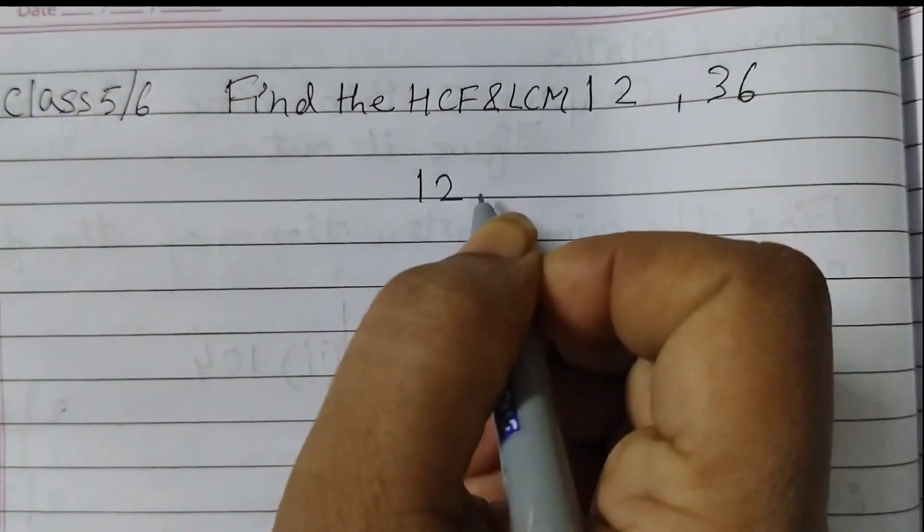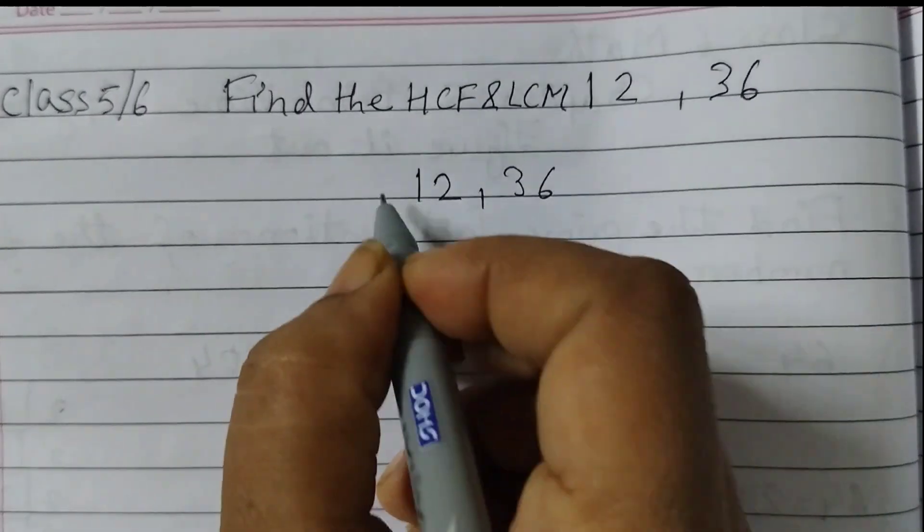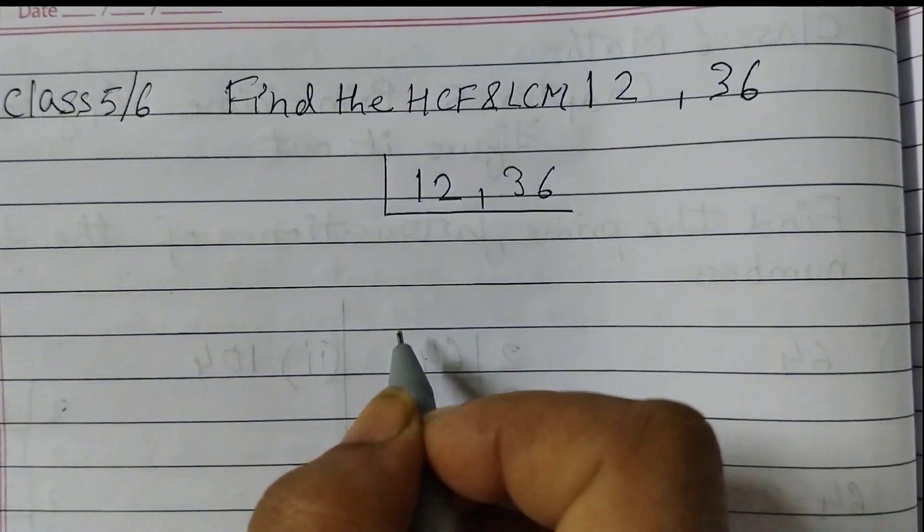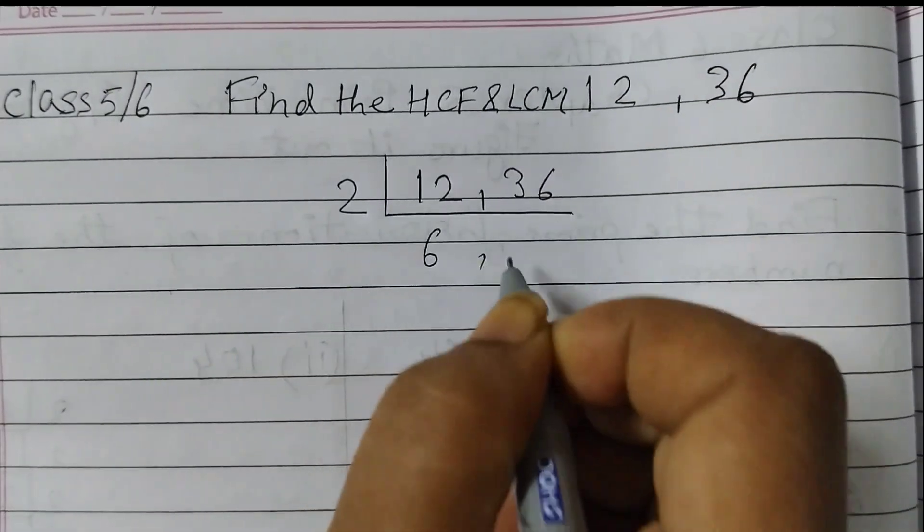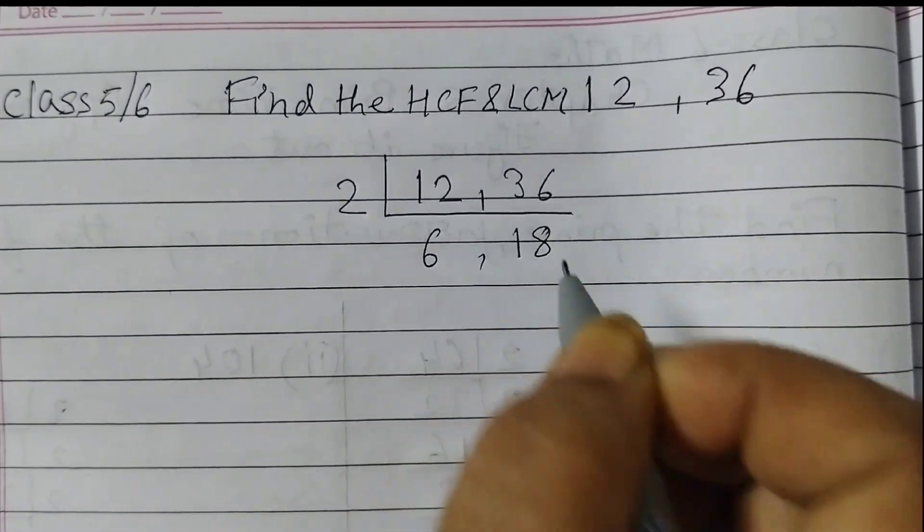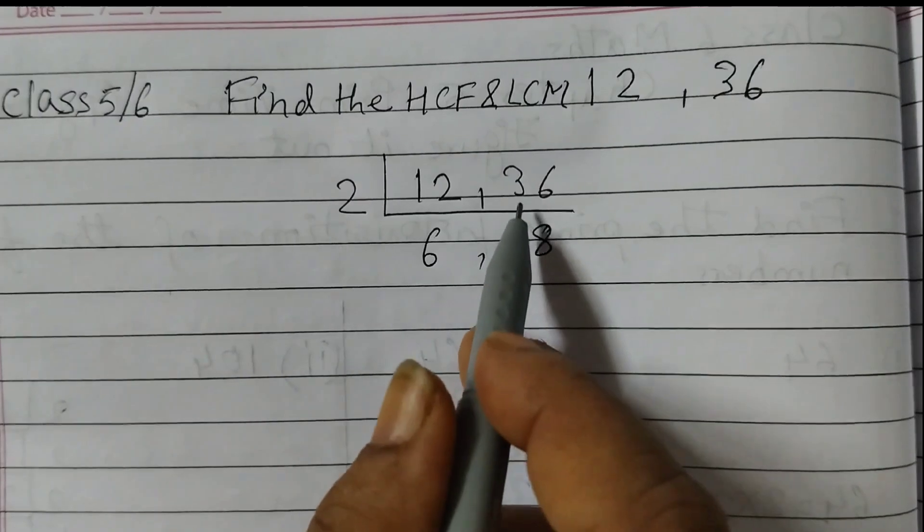So first write it like this: 12, 36, and start dividing by the smallest prime number, that is 2. 2 times 6 is 12, and 2 times 18 is 36.